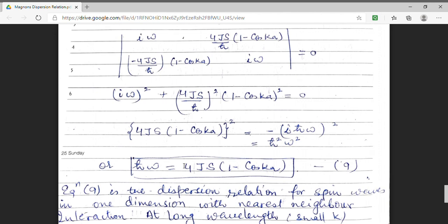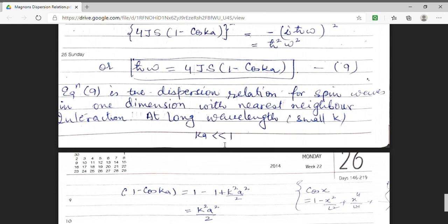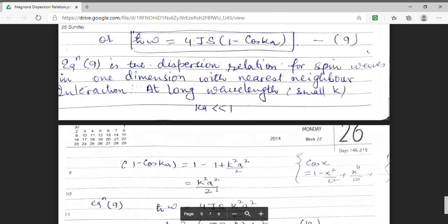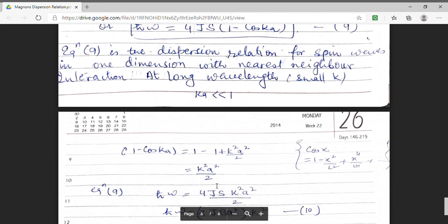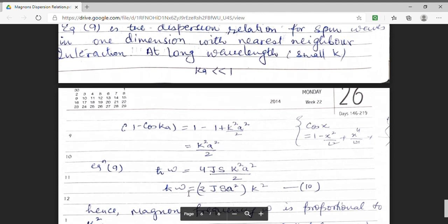This is the dispersion relation for spin waves. Dispersion relation means the relation between omega and k. Here, we can see that when wavelength is long, that means when wave vector is small, that means ka to be very much less, then, I can approximate 1 minus cos ka as 1 minus 1 plus k square a square by 2. So, substituting in spite of 1 minus cos ka, k square a square upon 2.